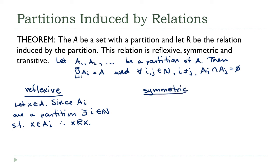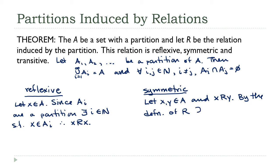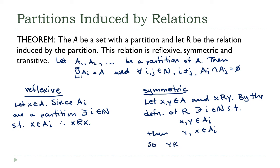For symmetry in the general case: let x and y be elements of a such that x is related to y. By the definition of the relation, there exists an i such that x and y are in a sub i. If x and y are in there, then y and x are in there — the order we list them doesn't matter. So y is related to x.